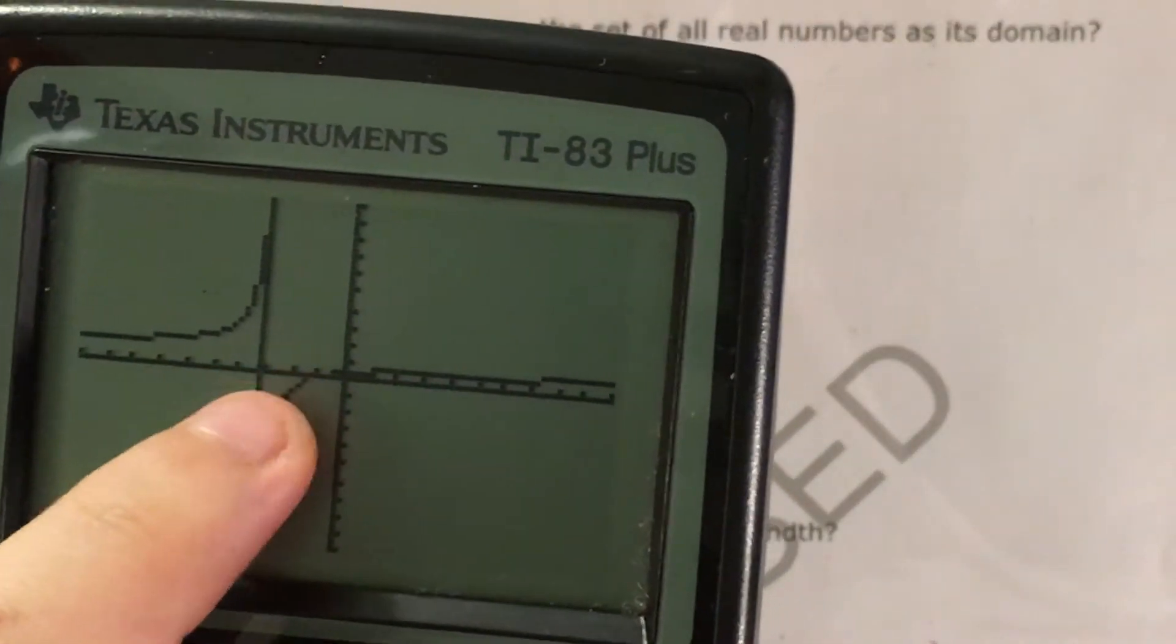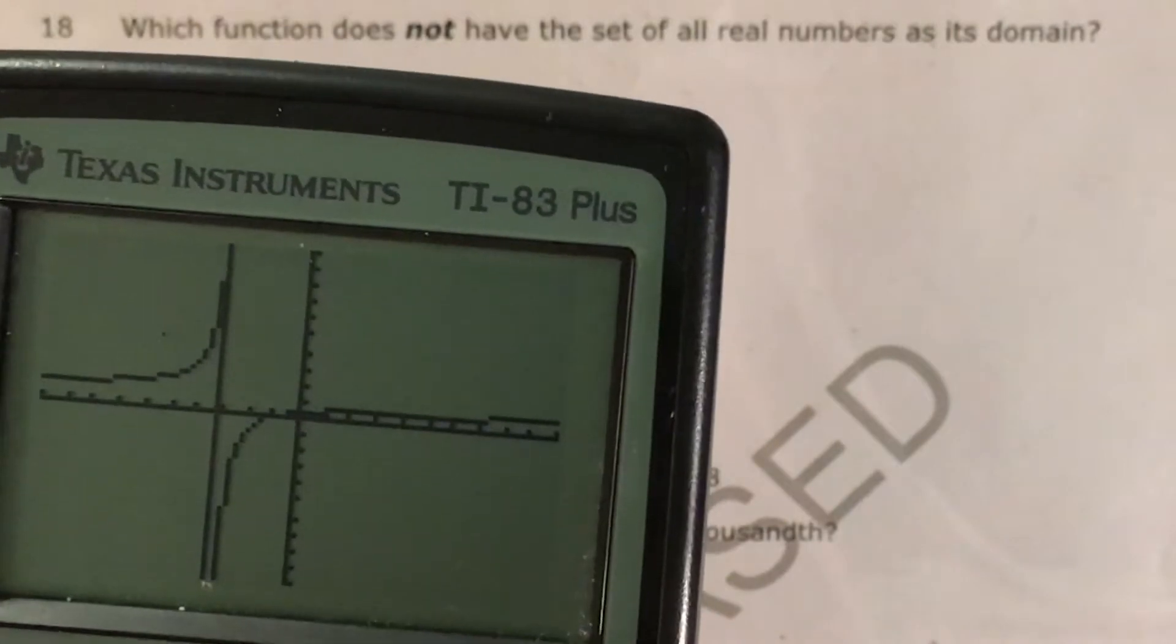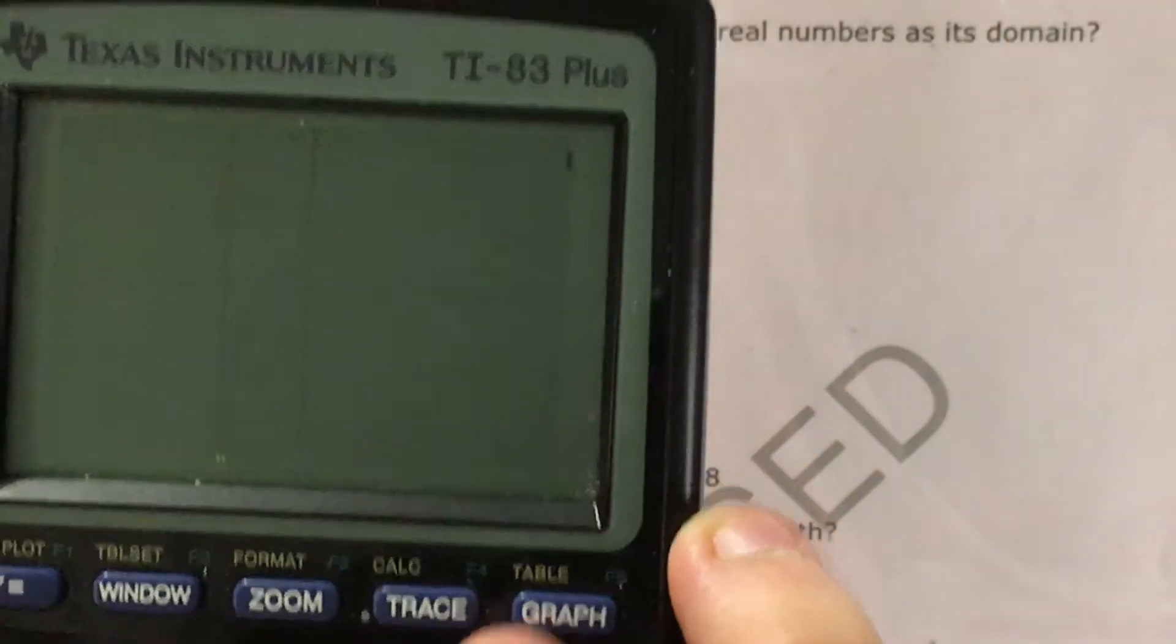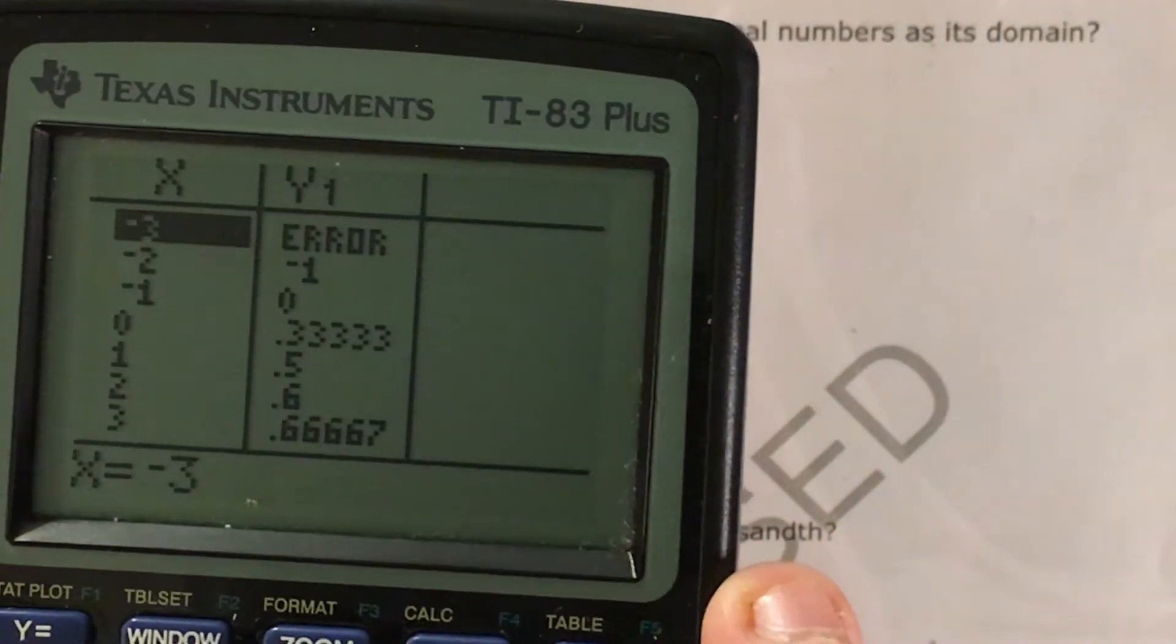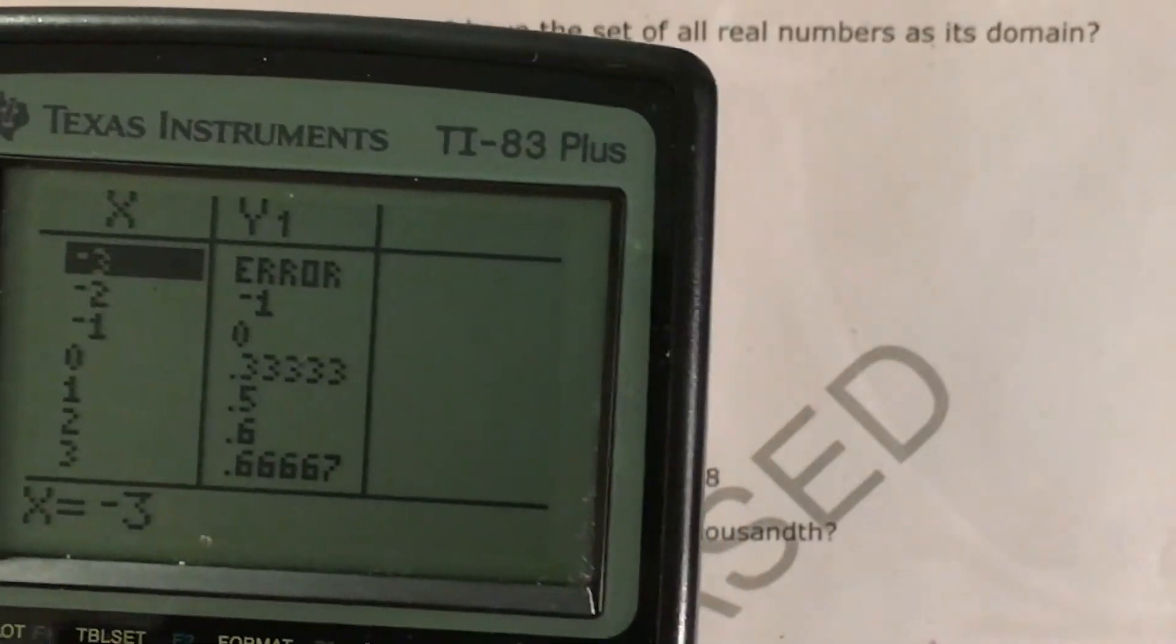Well, it appears to be coming right at negative 3, so I press second table, and at negative 3 I get an error. What's going on with that negative 3 there?